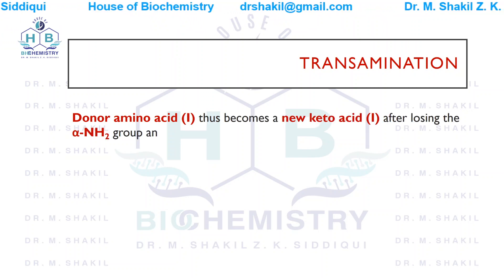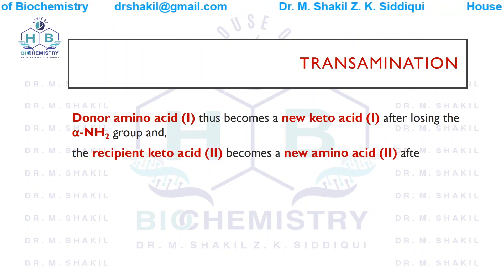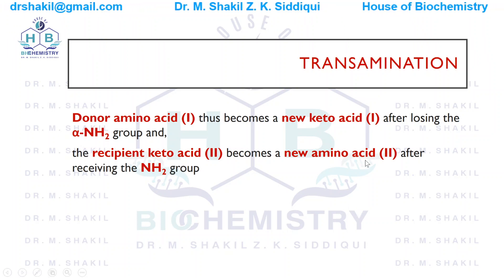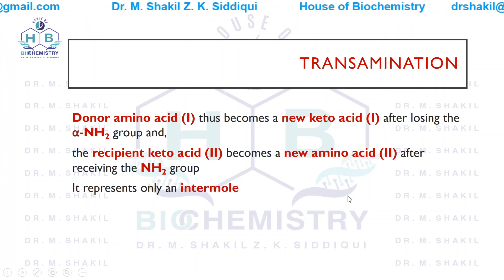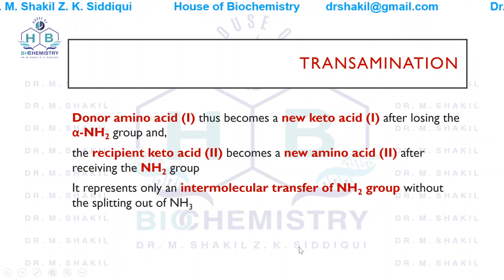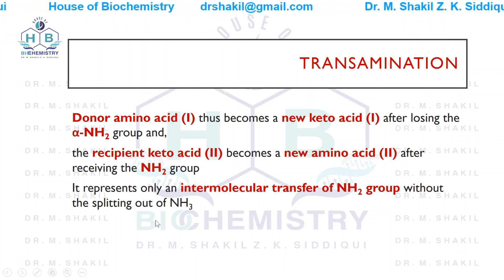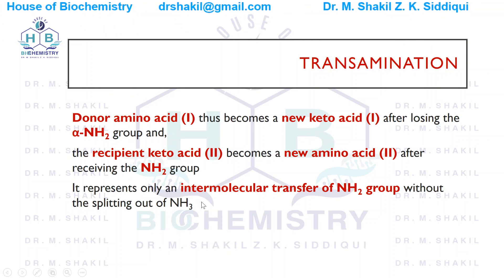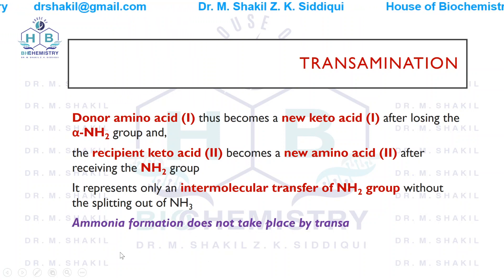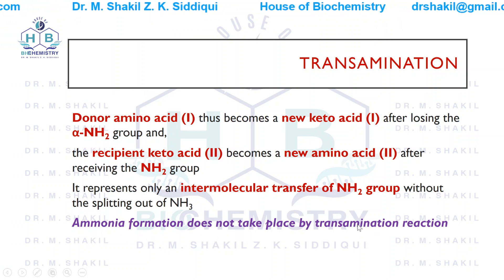In this reaction, the donor amino acid (amino acid 1) becomes a new keto acid after losing its alpha amino group, and the recipient keto acid (number 2) becomes a new amino acid after receiving the amino group. This represents only an intermolecular transfer of the amino group — ammonia is not liberated at this stage. Remember: in the transamination reaction, ammonia is not formed.